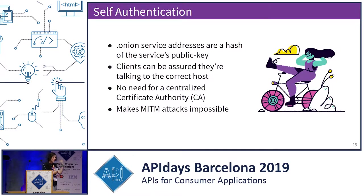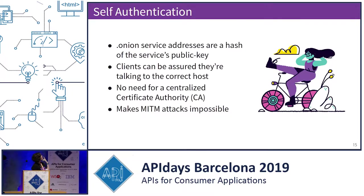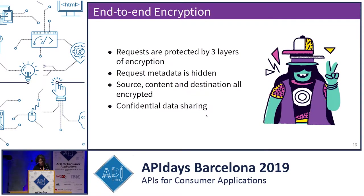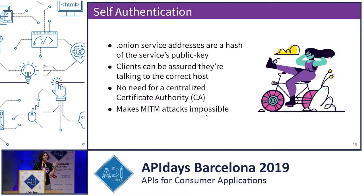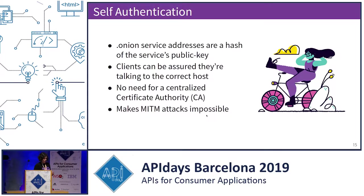Why is an onion address self-authenticated? Onion addresses are 56 characters, and these 56 characters are a hash of the public key of the onion service. No one else can generate this and target the same service. That means there's no impersonation possible — the only way someone could reach the wrong service is if they mistype the address somehow. And this is all guaranteed without a centralized certificate authority.